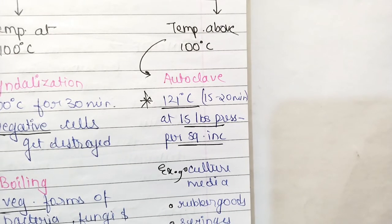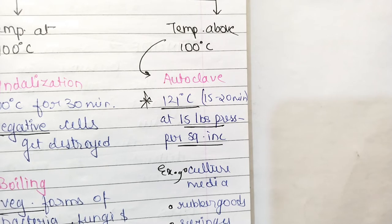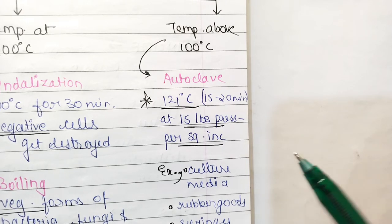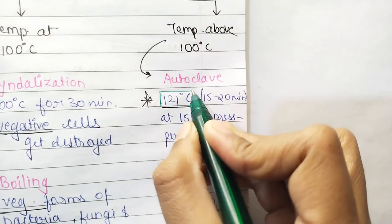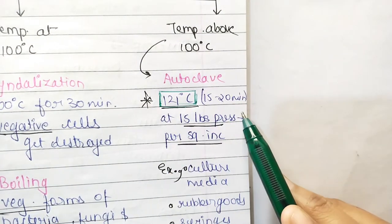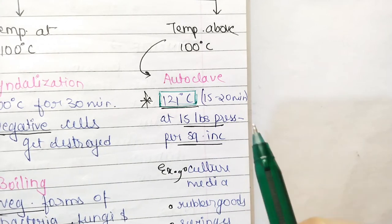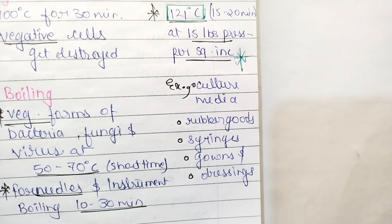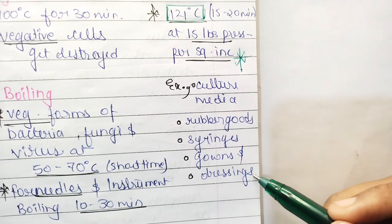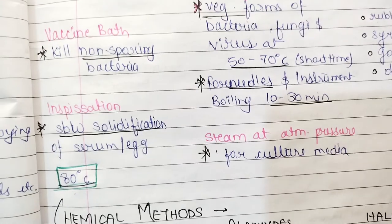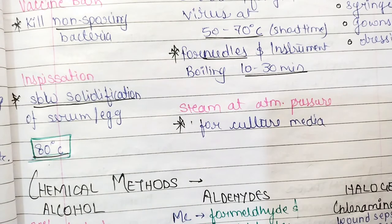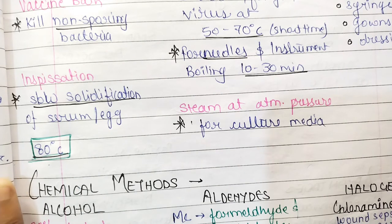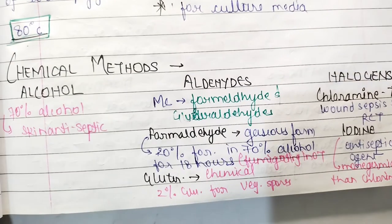If the temperature is above 100 degrees Celsius, we use autoclaving. Autoclaving is at 121 degrees Celsius for 15 to 20 minutes at 15 lbs pressure per square inch. This is a very important fact to remember. Examples of items sterilized by autoclaving include culture media, linen goods, rubber goods, syringes, gowns, and dressings. Autoclaving is the most common and most important sterilization method, and you have likely seen it in your college.